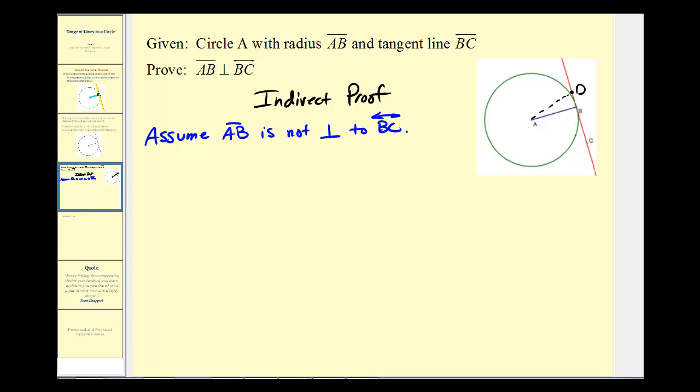Again, if they're not perpendicular, then there exists a point D such that segment AD would be perpendicular to line BC.